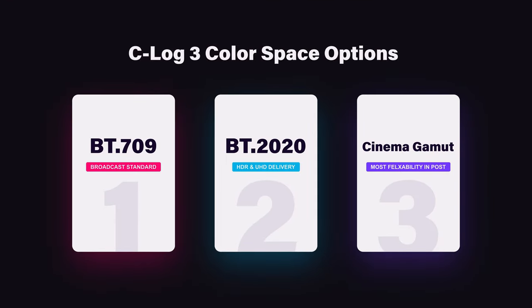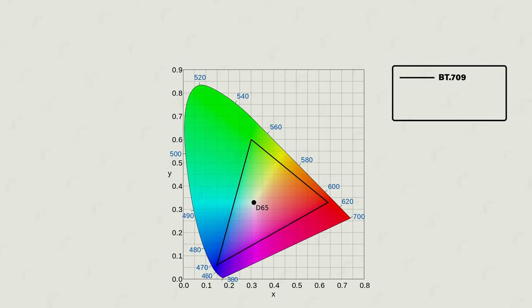Looking at the color spaces: if you're shooting in C-Log, you have two available — BT-709 and BT-2020. If you're shooting in C-Log 3, you get three: BT-709, BT-2020, and Canon Cine Gamut. BT-709 is the industry standard — for web, social, and television use, it's the color space the whole industry uses. BT-2020 is an expanded range of BT-709, more suited for HDR use and HDR video.